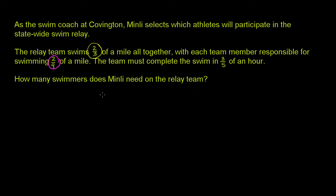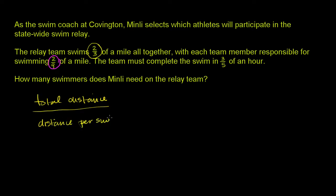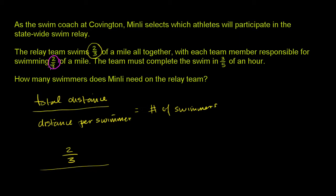What we need to think about is: what's the total distance they need to cover? The total distance divided by the distance per swimmer is going to give us the number of swimmers we need. The total distance is two-thirds of a mile, and the distance per swimmer is two-ninths of a mile. So two-thirds divided by two-ninths will give us the number of swimmers. You could even include the units and it all works out.